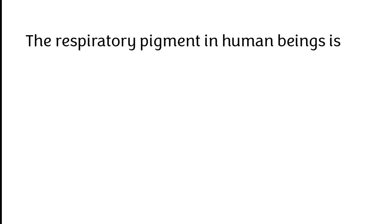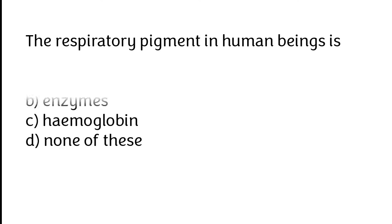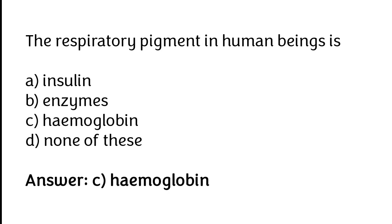The respiratory pigment in human beings is: insulin, enzymes, hemoglobin, none of these. The correct answer is option C. The respiratory pigment in human beings is hemoglobin.